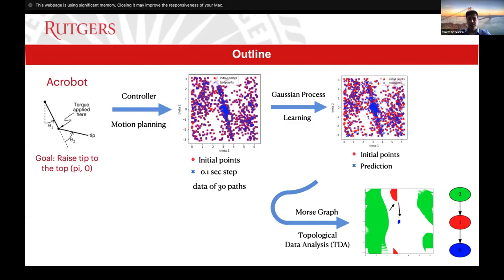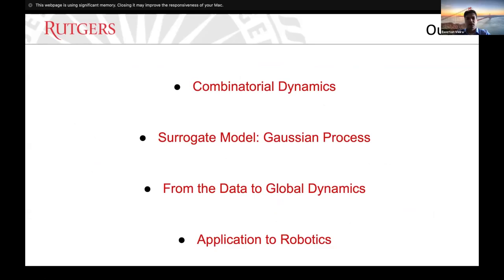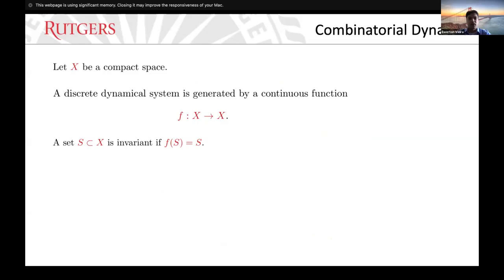The outline is as follows: first I will talk about combinatorial dynamics and some definitions. Then I will talk about the surrogate model — specifically the Gaussian process — then how to get the global dynamics from the data, and then the application to robotics.